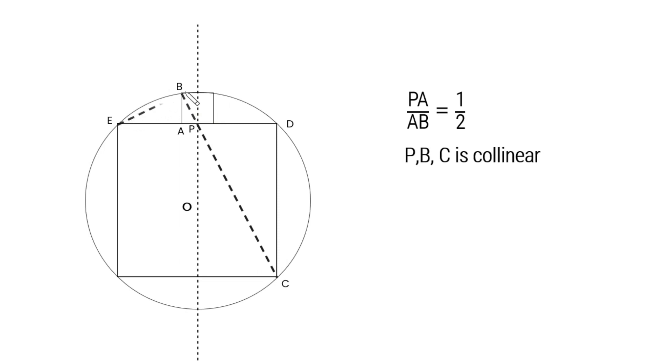Connect segment EB. These two angles have a common arc of BD, so these two angles are equal. Let's say the angle is alpha.